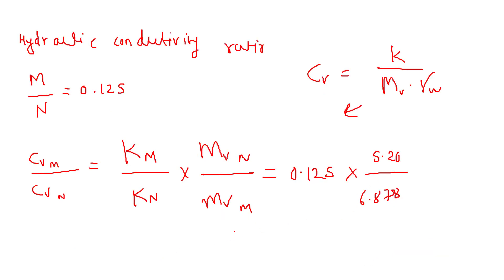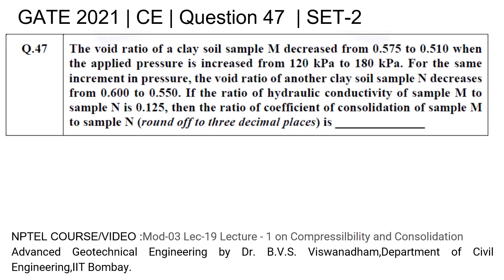So our final answer will come out to be 0.0946. Writing down the same here: 0.09, round off to 3 decimal places - first, second, and third - 0.094. Thank you.